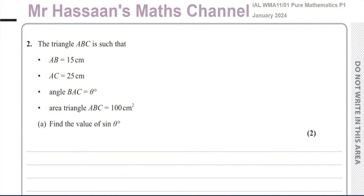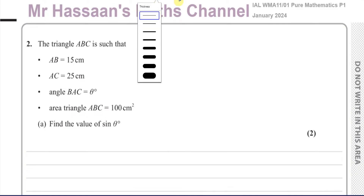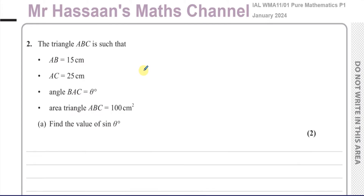Welcome back, this is Mr. Hassan's maths channel. I'm now answering question number two from the January 2024 international A-level Pure Mathematics P1 paper from Edexcel. This question is about trigonometry. We're told that there's a triangle ABC where AB is 15 centimetres, AC is 25 centimetres, angle BAC is theta degrees, and the area of triangle ABC is 100 centimetres squared. Find the value of sine of theta.